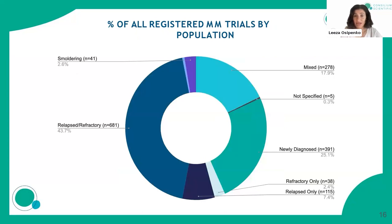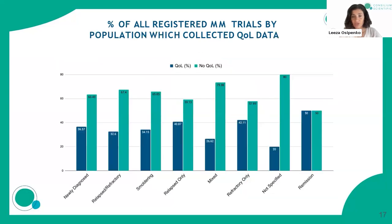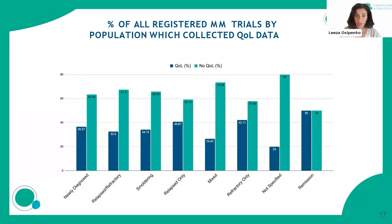Looking at types of myeloma, most trials are in the relapsed/refractory setting, which is not surprising, though there is a growing number in newly diagnosed myeloma patients. The distribution of quality of life data collection by myeloma type must be viewed relative to the total number of trials in each category, since for example smoldering myeloma has significantly fewer trials than relapsed/refractory. But for clinicians and patients focused on a specific type of myeloma, this information is important.